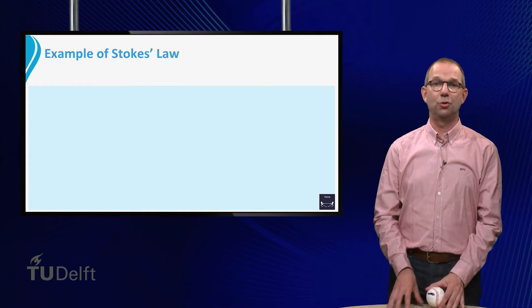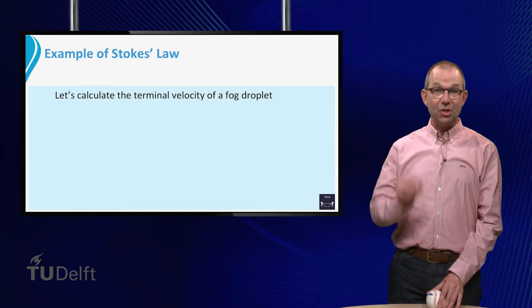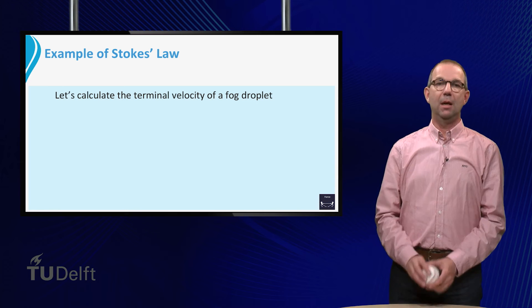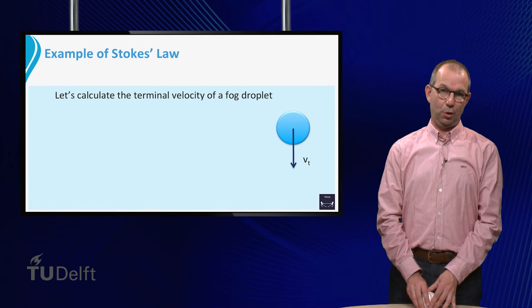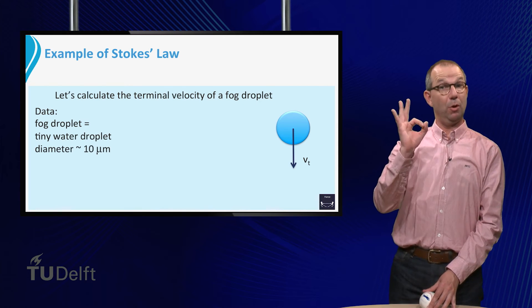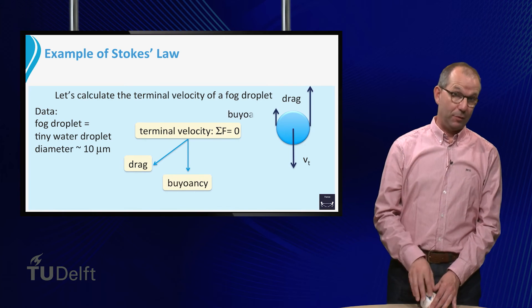Let us calculate the terminal velocity of a fog droplet. We know that it is a tiny water droplet with a diameter of about 10 micrometer. Calculating the terminal velocity means that we set the sum of forces equal to zero. These are drag, buoyancy and gravity.